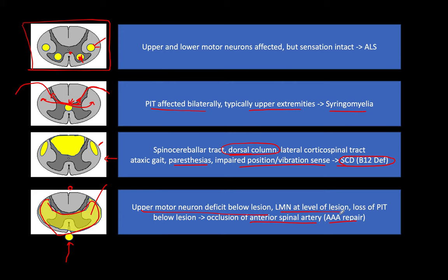Loss of pain, itch, and temperature occurs below the lesion because the spinothalamic fibers can't travel upward. Associate the anterior spinal artery occlusion with triple-A repair and you should be all set for the exam.